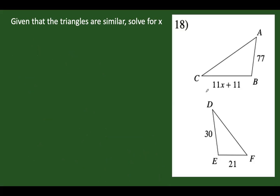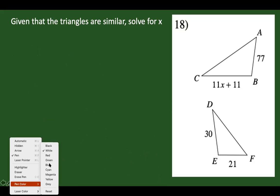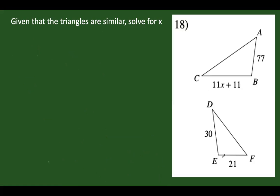Next, let's have number 18. Analyzing the given figure, the longest side here is AC and here is DF, so these are the corresponding sides.